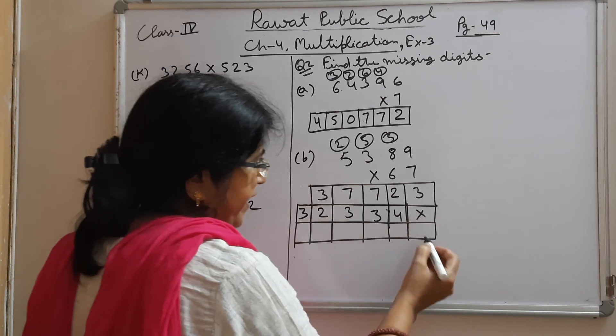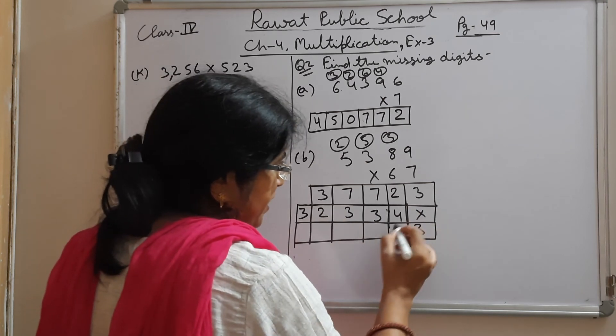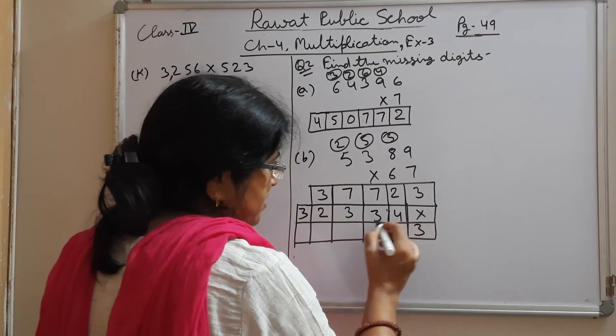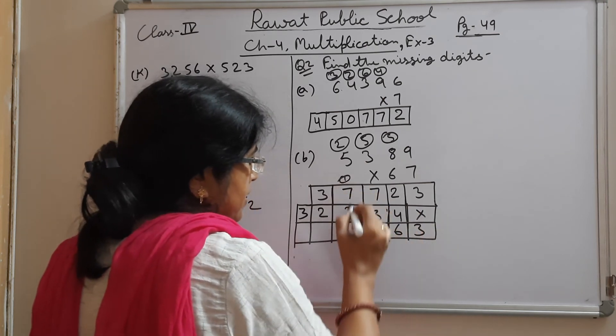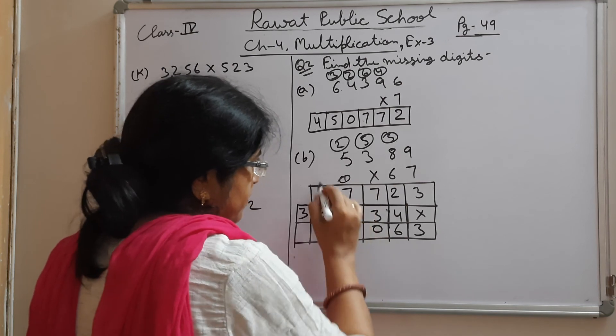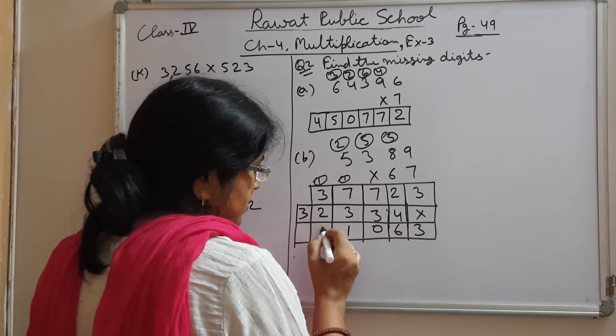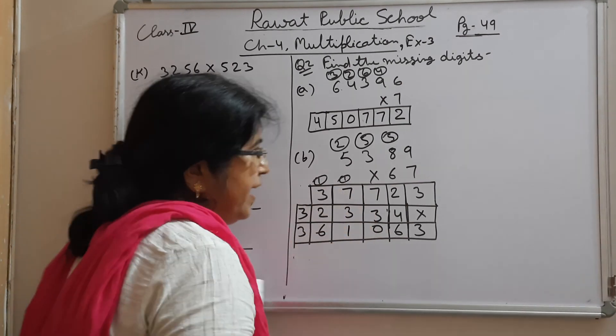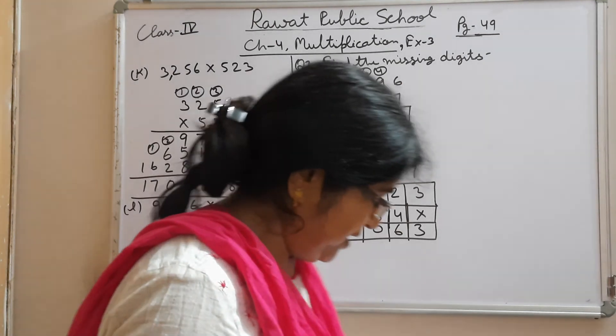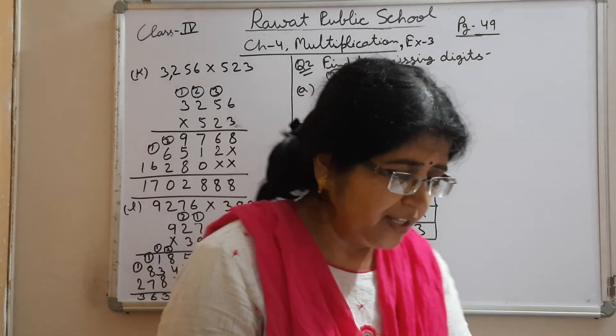Now add the two rows: 3; 6; 0; 1; 11, 1 carry over; 6 and 3. I hope all of you understand these questions.